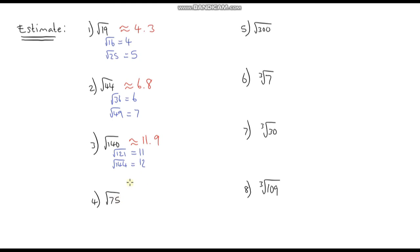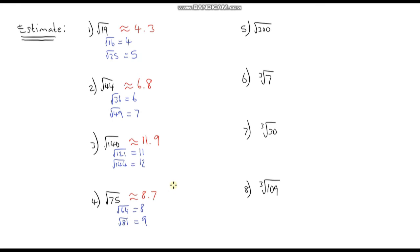Next: square root of 75. 8 squared is 64, so the square root of 64 is 8. And 9 squared is 81, so the square root of 81 is 9. It's going to be between 8 and 9 — this time a bit closer to 9. Let's go with approximately 8.7. I think that's going to be quite close.